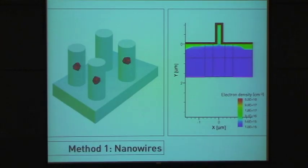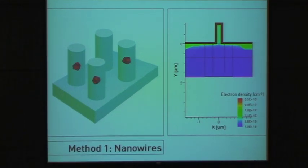The structures that we're using to do this, the first one is diamond nanowires. We just take a piece of diamond, we write circles on the top using e-beam lithography, and then we etch wires into it and we end up with these nice pillars.